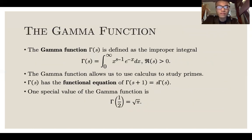The gamma function is defined as the improper integral from zero to infinity of x to the power of s minus one, e to the negative x dx. This is a highly important function because it allows us to use calculus to study primes. Other interesting properties it has is that gamma of s plus one is s gamma of s, and gamma of one-half is the square root of pi.